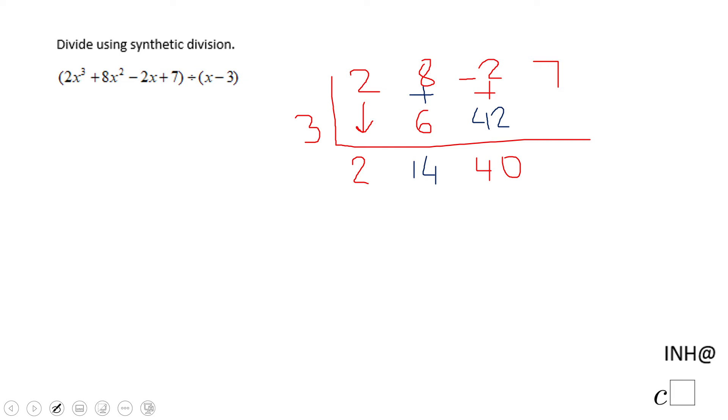Negative 2 plus 42 is 40, 3 times 40 is 120, and I'm going to add. That will give me 127. This is the remainder.